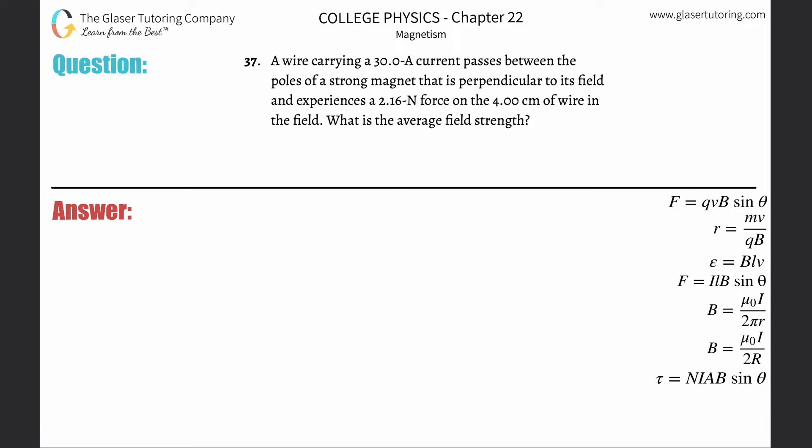Number 37, a wire carrying a 30 amp current passes between the poles of a strong magnet that is perpendicular to its field and experiences a 2.16 Newton force on the 4 centimeters of wire in the field. What is the average field strength?